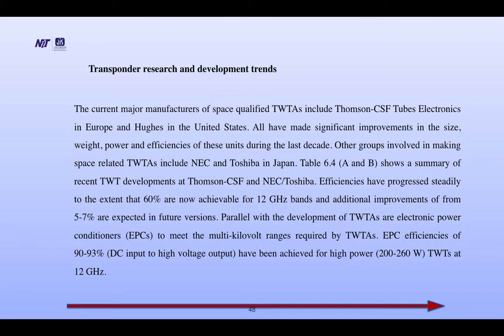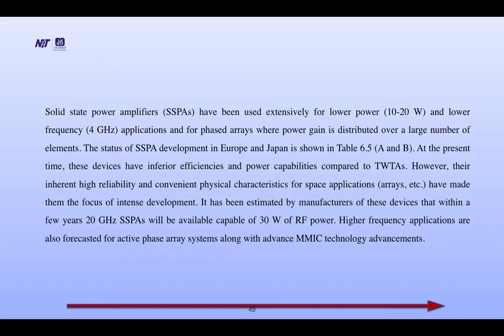Additional improvements from 5 to 7% are expected in future versions, and in modern conditions it may be more. Parallel with the development of TWTAs are electronic power conditioners (EPCs) to meet the multi-kV requirements of TWTAs. EPC efficiency of 90 to 93% DC input to high-voltage output has been achieved for high-power 200 to 260 Watt TWTAs at 12 GHz. Solid-state power amplifiers (SSPAs) have been used extensively for low-power 10 to 20 Watt and lower-frequency 4 GHz applications, and for phased arrays where power gain is distributed over a large number of elements.